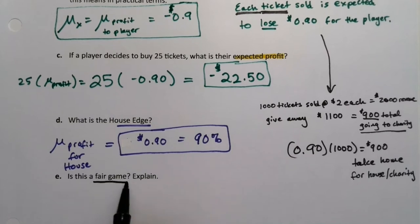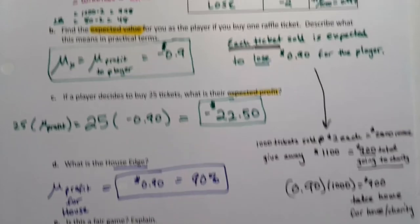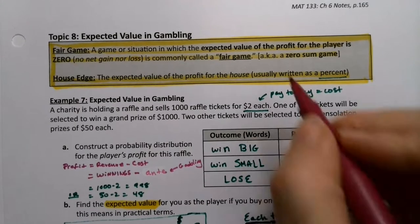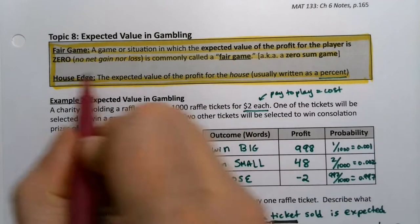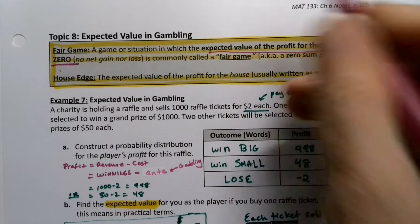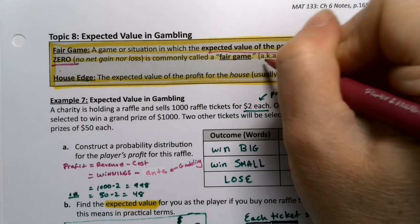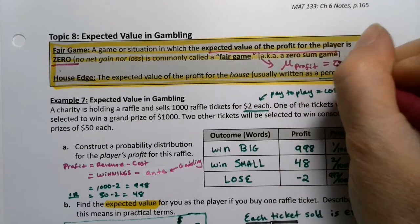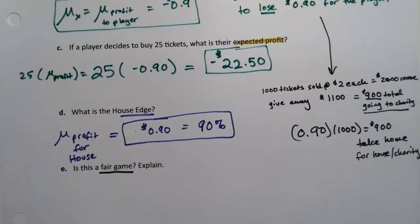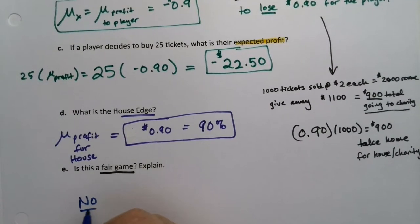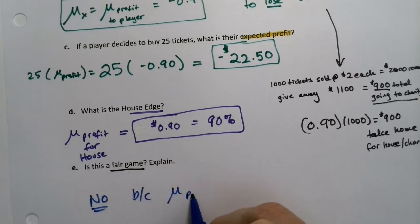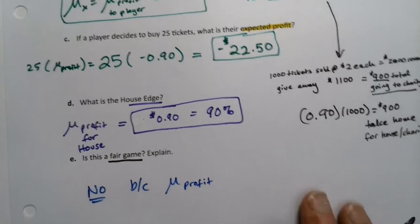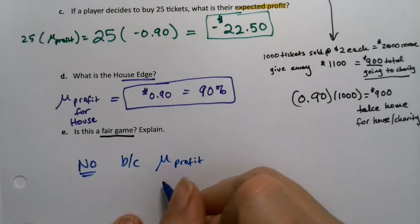Now, is this a fair game? Well, for that, we have to go back to the definition of fair game at the top. A fair game is a game that has an expected value of zero. A fair game is the expected value for the profit is zero. That's a fair game. And so this is not a fair game. No.